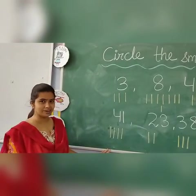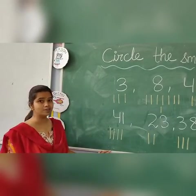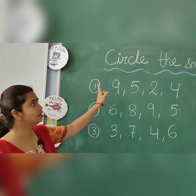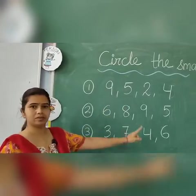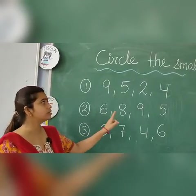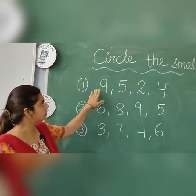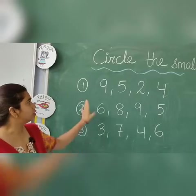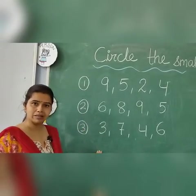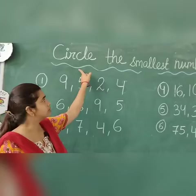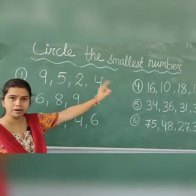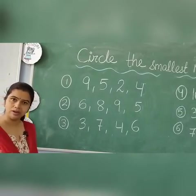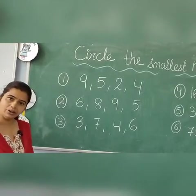Hope children, you understand how to find out the smallest number. I have written here some numbers, and you have to find out which is the smallest number in this group of numbers. So children, do this in your maths copy. Give the heading like this: Circle the smallest number. Then you have to write these numbers in your copy and circle the smallest number.